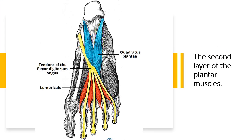The second layer has two muscles: the quadratus plantae and the lumbricals.